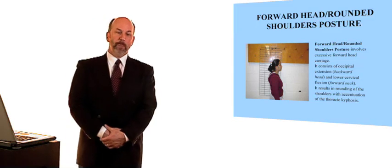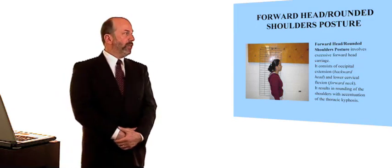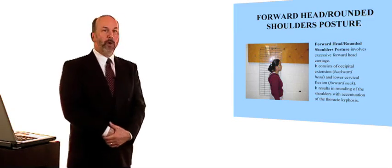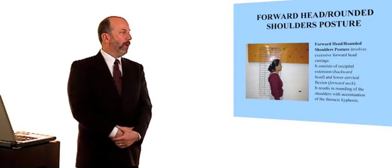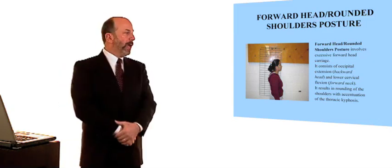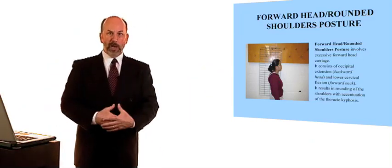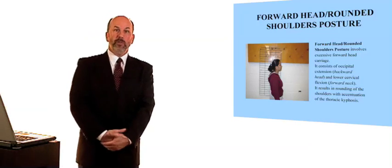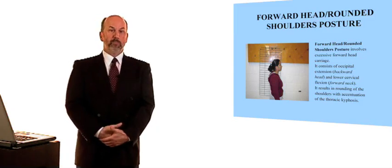Forward head, rounded shoulders posture is ubiquitous. It is something that affects most of us as we age. And you can see demonstrated here, this young lady, even at her young age in her early 20s, is already beginning to demonstrate forward head, rounded shoulders posture, which involves excessive forward head carriage with the backward head and the forward neck. The result being rounding of the shoulders, protraction of the scapulae, and accentuation of the thoracic kyphosis. So anything that addresses forward head, rounded shoulders posture, be it manual therapy, be it therapeutic exercise, be it myofascial release, or the use of the posture jack, needs to address these malalignments to bring about optimal alignment.